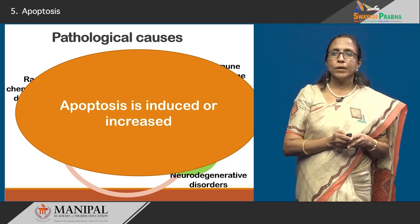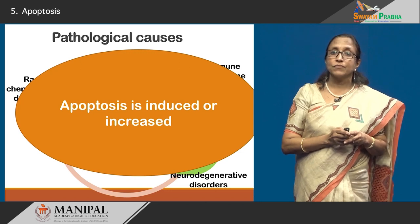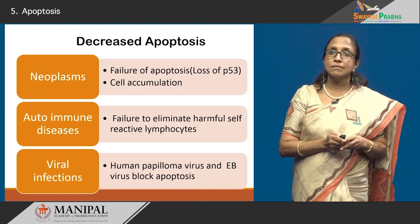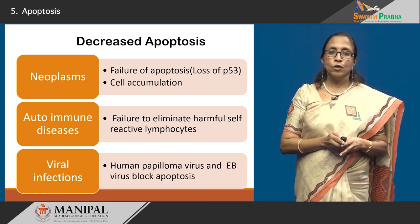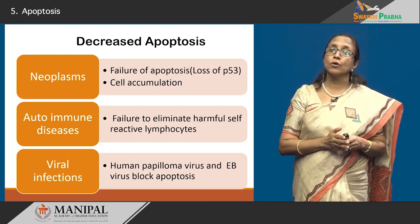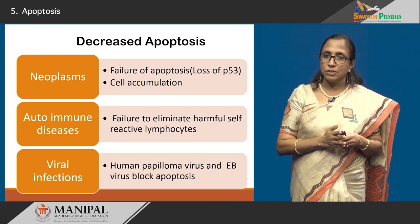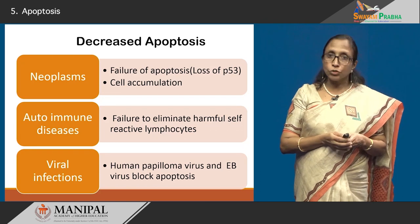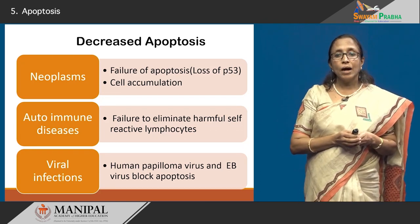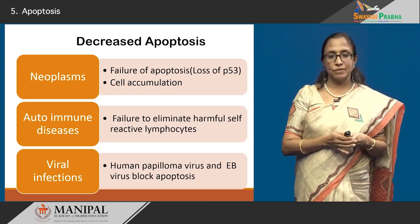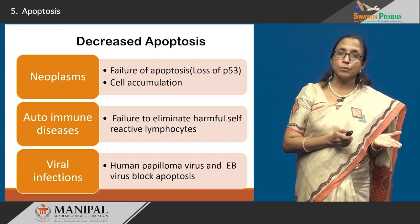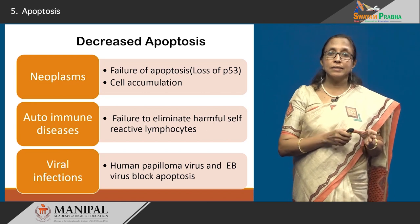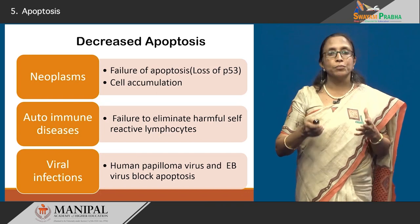With all this, hepatosis in these conditions is induced, facilitated, or increased. We also have to be very aware of diseases or conditions which can be sinister with decreased hepatosis. For example, neoplasms are occurring because of failure of hepatosis — the loss of the tumor suppressor gene p53 causes mutations to accumulate, cells to proliferate, and we get neoplasms. In autoimmune diseases, the failure to eliminate self-reactive lymphocytes leads to autoimmune disease. Viral infections too — like human papilloma virus and EB virus — can act as anti-hepatotic agents, blocking hepatosis and allowing the virus to proliferate freely in the body.